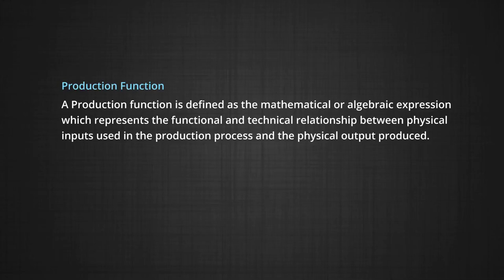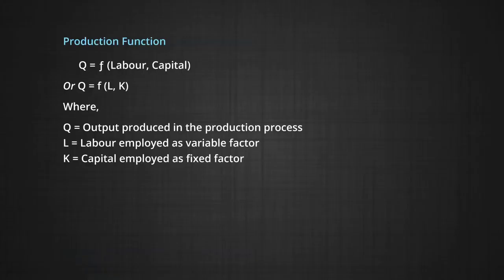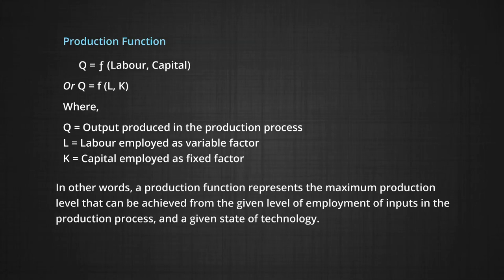A production function is defined as the mathematical or algebraic expression which represents the functional and technical relationship between physical inputs used in the production process and the physical output produced. It can be mathematically expressed as Q equals F of L and K, where Q is the output produced, L is the labor employed as a variable factor, and K is the capital employed. A production function represents the maximum production level that can be achieved from a given level of employment of inputs and at a given level of technology.